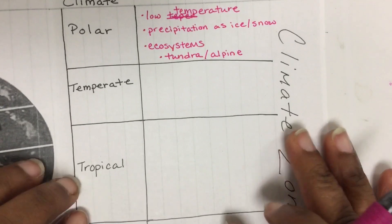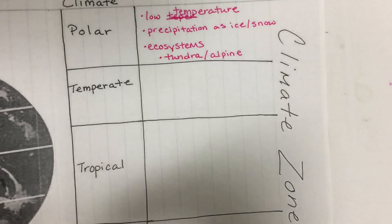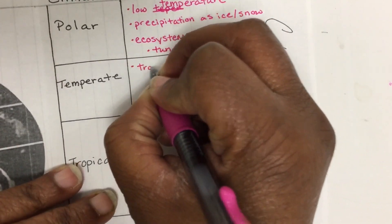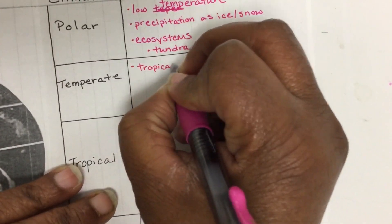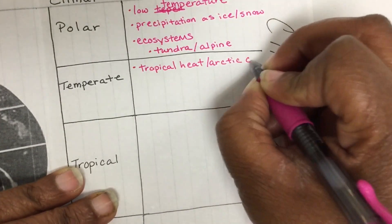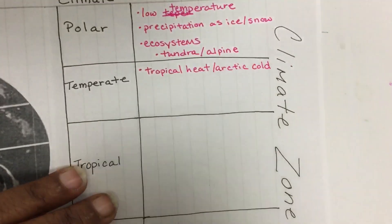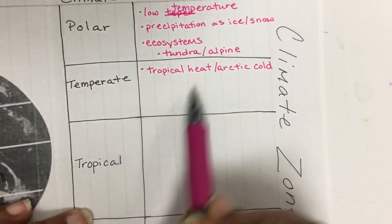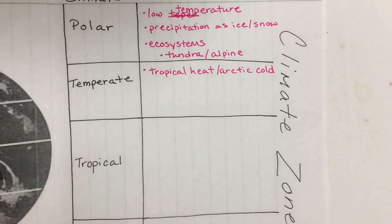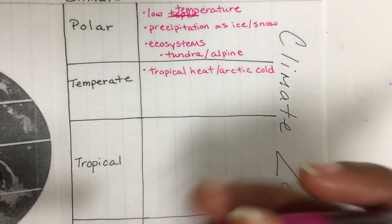In the temperate zone, you get a tropical heat or an arctic cold, so it's a little bit of both — it's more mild. Some places are going to be very hot, some places are going to be very cold. We typically get hot summers and cold winters.